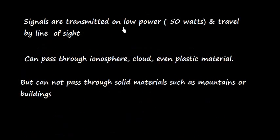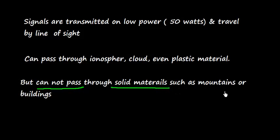These signals are transmitted on low power. This is pretty important to note that these signals are transmitted on low power, that is 50 watts, and they can travel by line of sight. That simply means they can pass through the ionosphere, clouds, even plastic material. However, they cannot pass through solid materials such as mountains or buildings. And that tells that GPS has certain limitations.